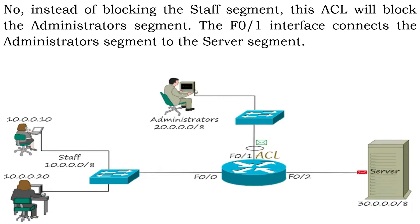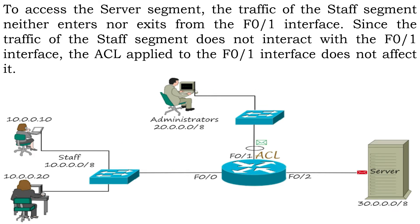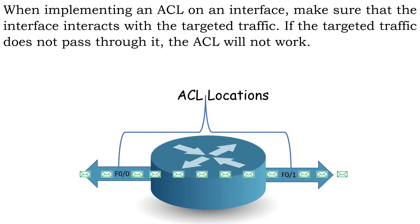No. Instead of blocking the staff segment, this ACL will block the administrator segment. The F0/1 interface connects the administrator segment to the server segment. To access the server segment, the traffic of the staff segment neither enters nor exits from the F0/1 interface. Since the traffic of the staff segment does not interact with the F0/1 interface, the ACL applied to it does not affect that traffic. When implementing an ACL on an interface, make sure that the interface interacts with the targeted traffic — if the targeted traffic does not pass through it, the ACL will not work.